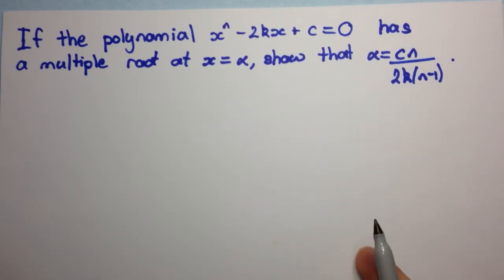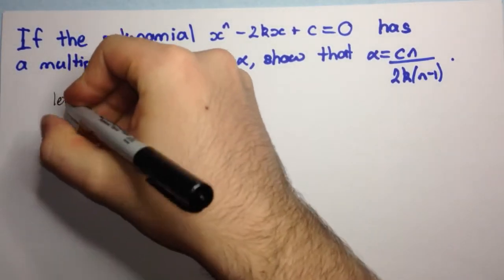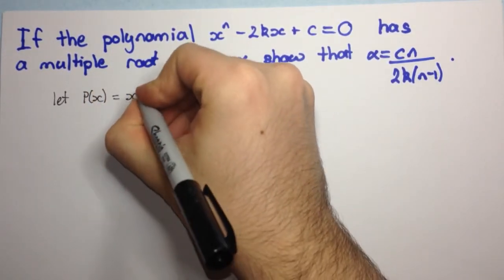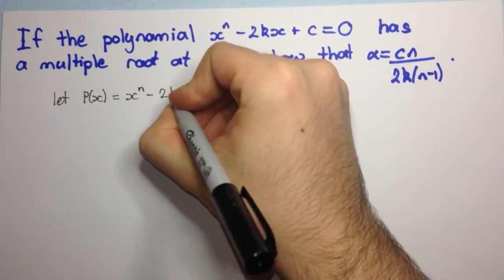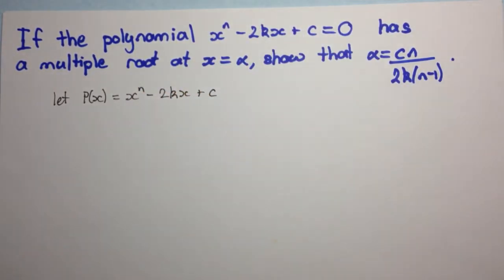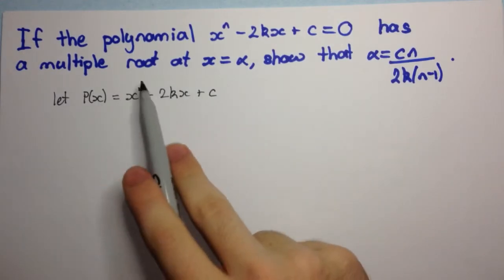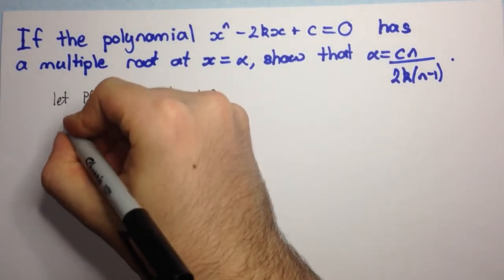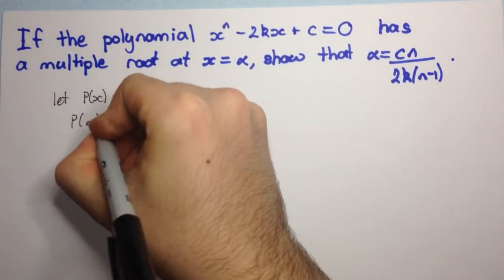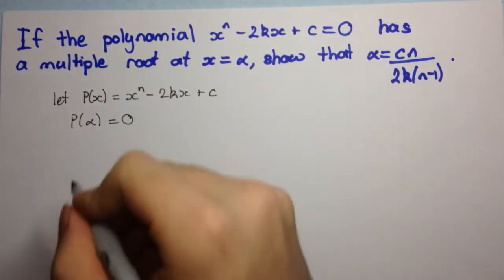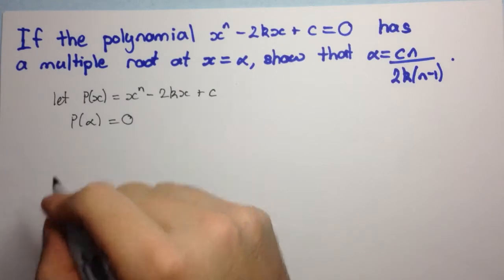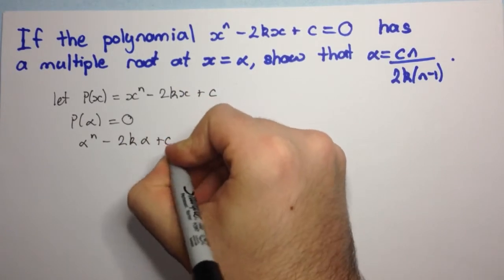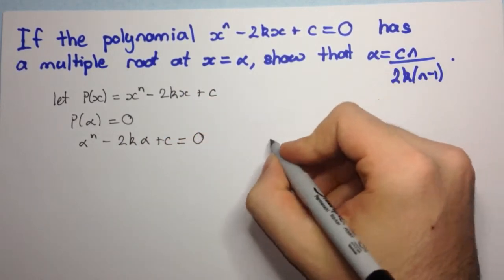To start off, let p of x equal the polynomial x to the n minus 2kx plus c. We're told that it has a multiple root at x equals alpha, so that means p of alpha is equal to zero. p of alpha is found by subbing alpha into the equation, giving us alpha to the n minus 2k alpha plus c equals zero. Let's call this equation one.